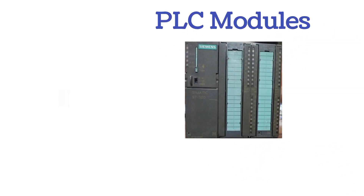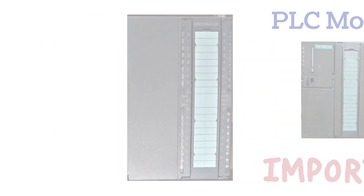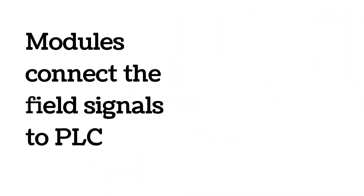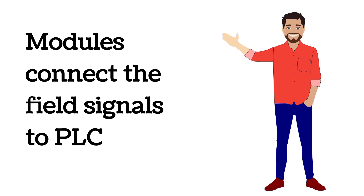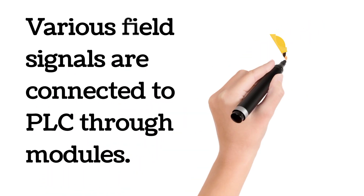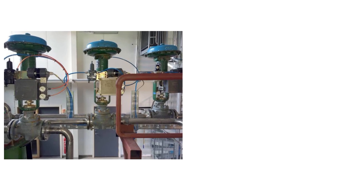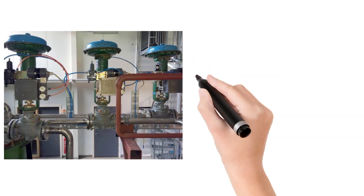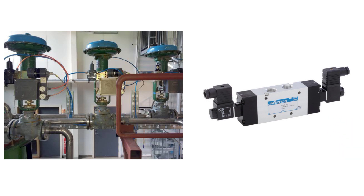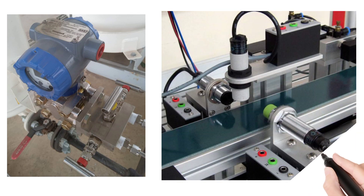Now we will discuss the PLC module. PLC modules play an important role for the PLC. Field signals are connected to the PLC through these modules. Various field signals are connected to the PLC, like a control valve signal — the control valve is operated by the PLC panel. Various sensors, transmitters, and switches are also connected to the PLC.